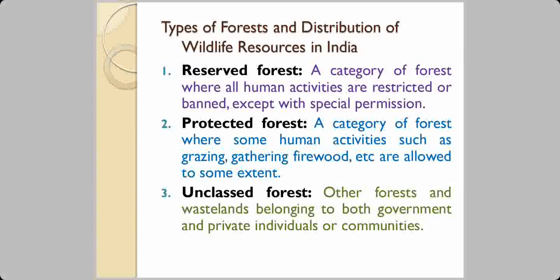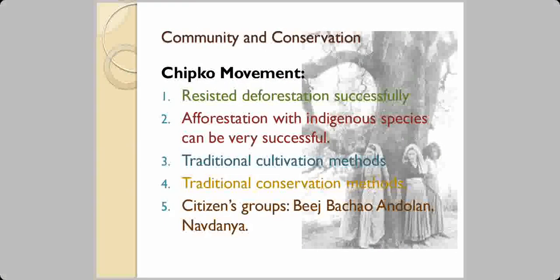Types of forest in India: Reserved forests are those where all human activities are restricted or banned except with special permission. Protected forests are those where some human activities such as grazing and gathering firewood are allowed. Unclassed forests are forest areas and wastelands belonging to both the government and private individuals or communities.